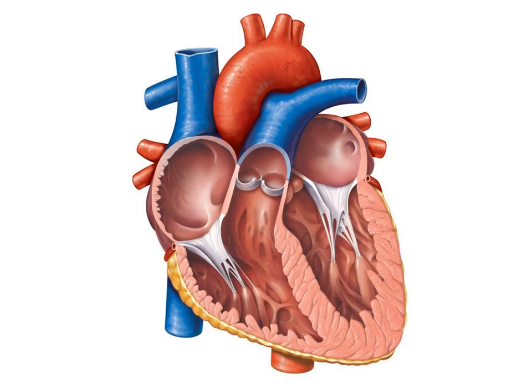This increased pressure backs up into the pulmonary veins and then into the lungs, leading to pulmonary congestion. If persistently narrowed and not relieved, blood in the pulmonary vasculature will be pushed back into the right atrium and right ventricle. The right atrium and right ventricle will become hypertrophied and dilated, with increased pressure from left atrium through pulmonary vasculature to right atrium and right ventricle.